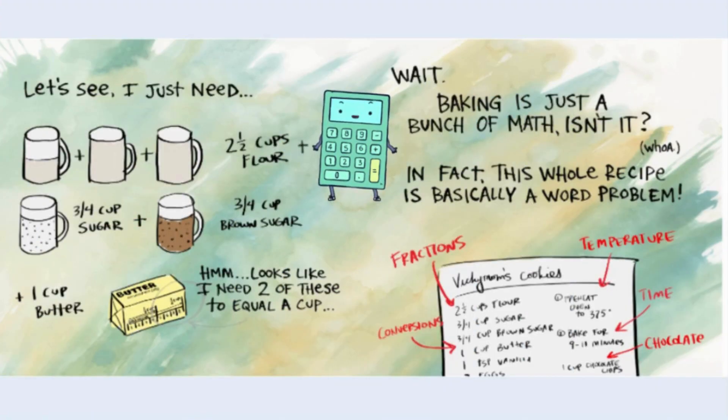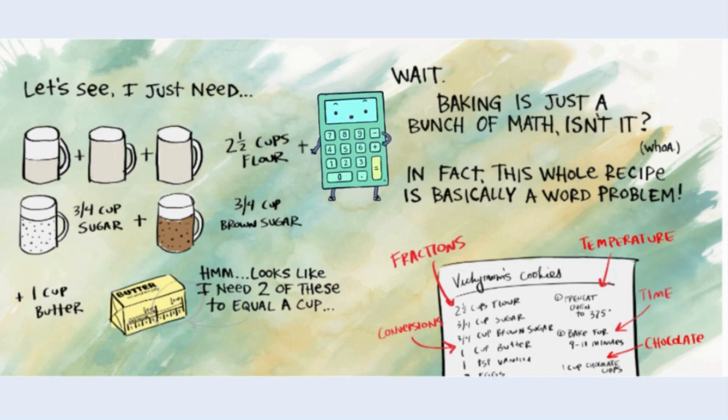Let's see. I just need two and a half cups of flour, three-fourths cup sugar, plus three-fourths cups brown sugar, plus one cup butter. Hmm, looks like I need two of these to equal a cup. Wait, baking is just a bunch of math, isn't it?